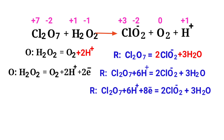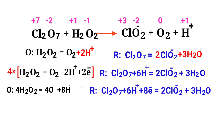Make the electron gain equivalent to the electron lost: the electrons lost in the oxidation half-reaction must equal the electrons gained in the reduction half-reaction. The oxidation half-reaction has two electrons, and the reduction half-reaction has eight electrons. To balance the number of electrons, multiply the oxidation half-reaction by a coefficient of four. Now you can add both reactions together.